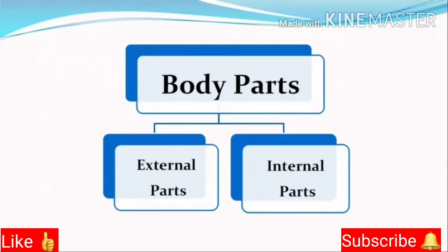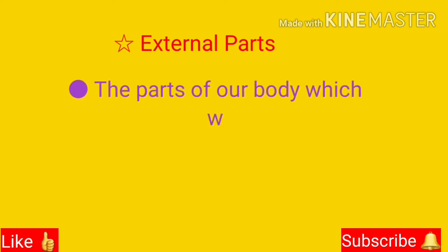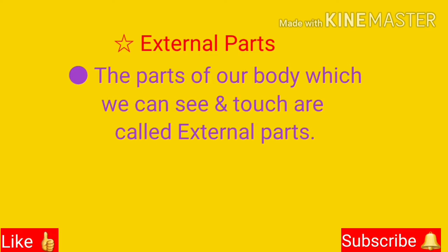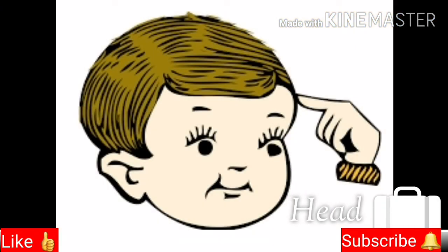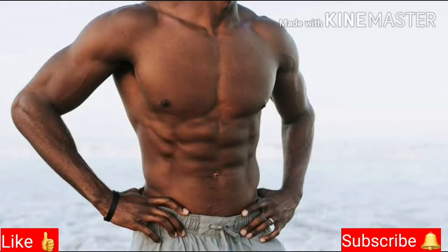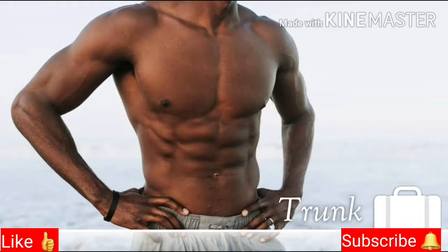So let's talk first about external parts. The parts of our body which we can see and touch are called external parts. For example, head, neck, trunk and limbs.